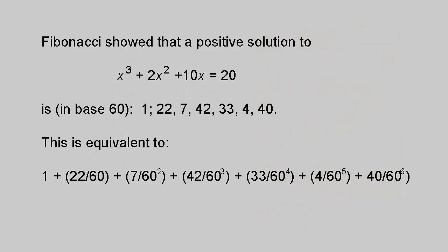Fibonacci also showed he was capable of some amazing feats of calculation. For example, he found the positive solution of the cubic equation x³ + 2x² + 10x = 20 using the Babylonian number system with base 60, which was a strange choice in view of his public advocacy of the decimal system. He gave the result as 1, 22, 7, 42, 33, 4, 40, which is equivalent to 1 + 22/60 + 7/60² + 42/60³ + 33/60⁴ + 4/60⁵ + 40/60⁶. How on earth he obtained this, nobody knows. It was 300 years before anyone else could obtain such accurate results.